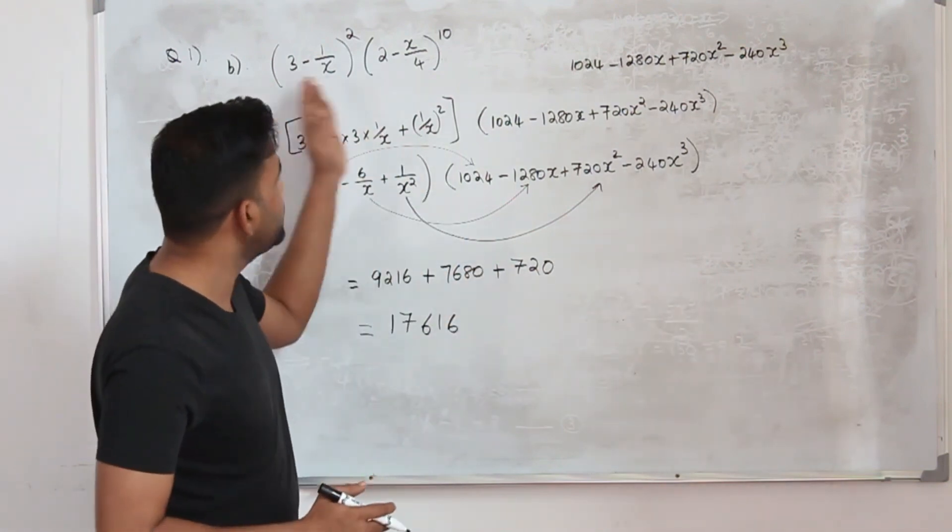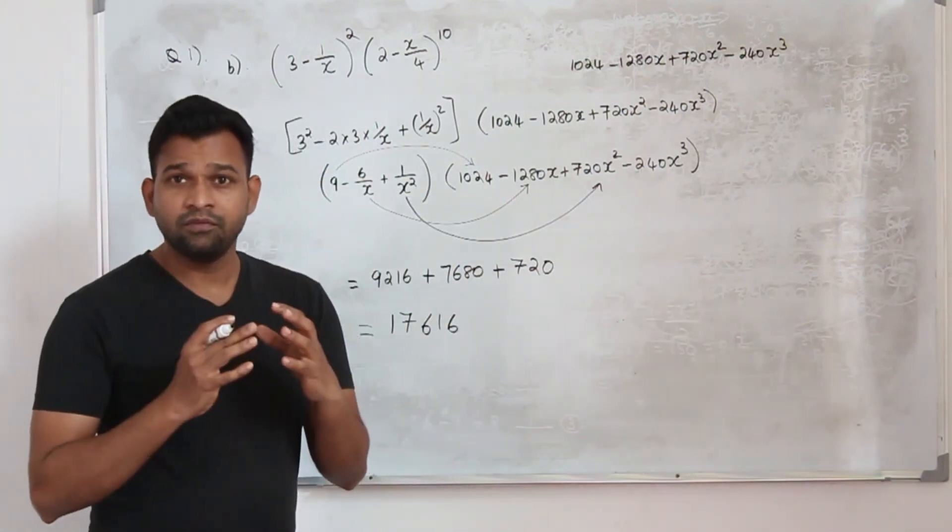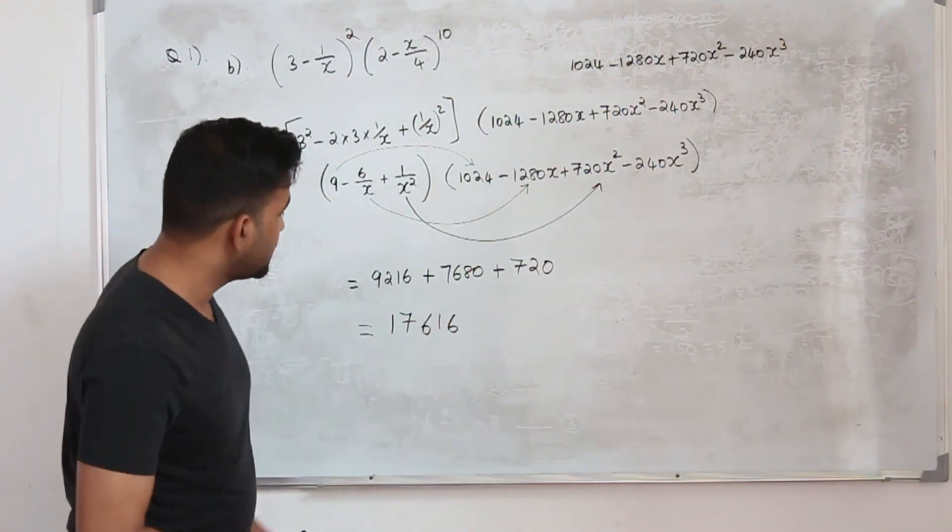After multiplying everything, 17616 will be your term which is independent of x, the constant term.